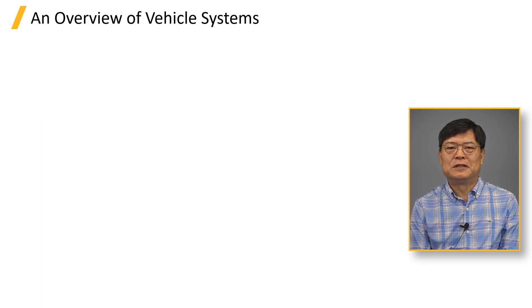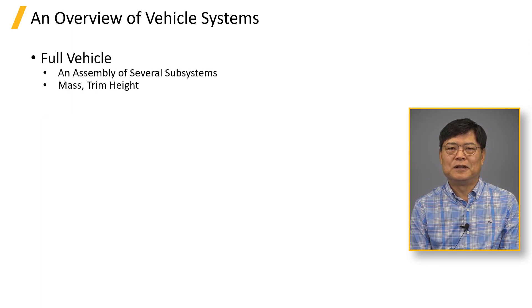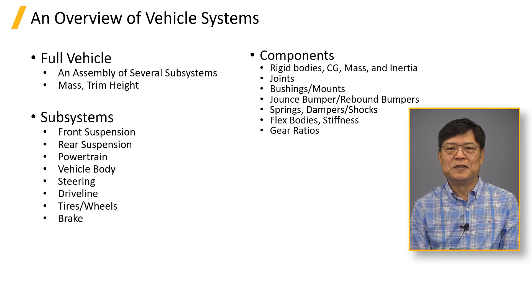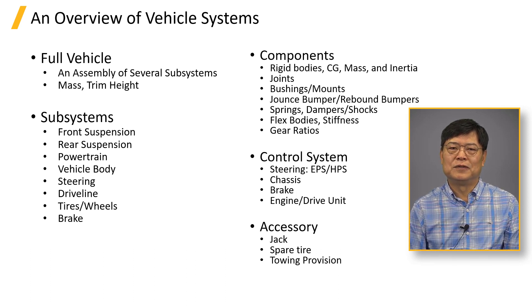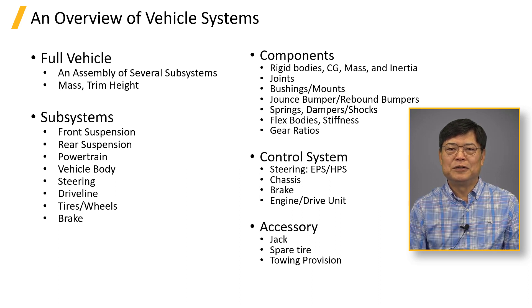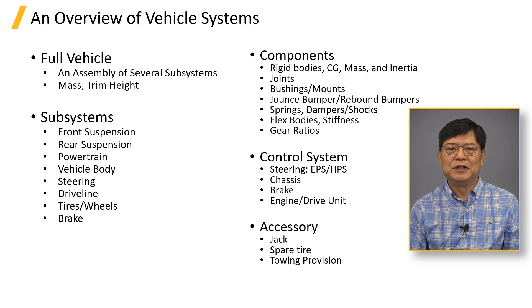A vehicle dynamics model has many components and subsystems. Subsystems and full vehicle models are built to answer questions for design decisions. Does a vehicle design satisfy vehicle performance requirements for vehicle handling, ride, durability, NVH, and so on? Vehicle dynamics engineers should have a good understanding about vehicle underbody and suspension system, including wheels and tires.